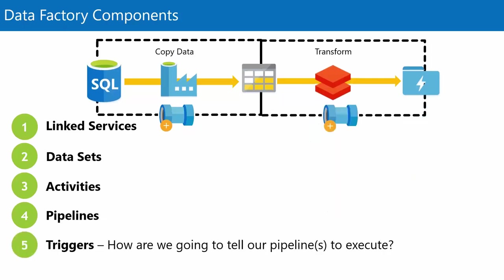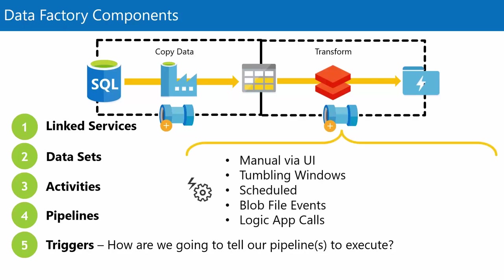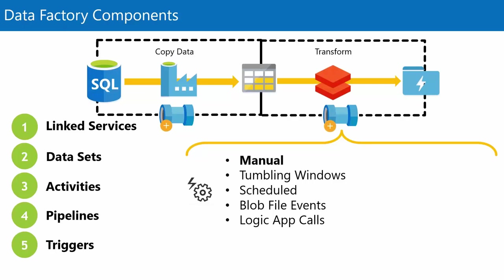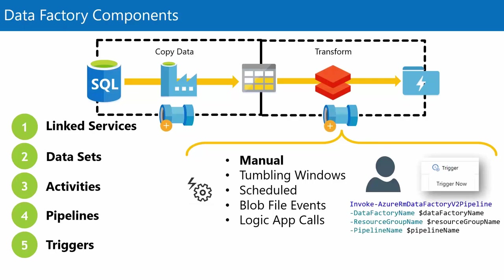The fifth thing we might need is something to execute our pipelines — these are called triggers. In Data Factory we create a trigger and attach it to one or many pipelines. Triggers can be manual and tumbling windows, among others. With manual triggers, a user or developer clicks 'trigger now,' or we can use a bit of PowerShell, which I consider a manual approach — though we could automate that further.